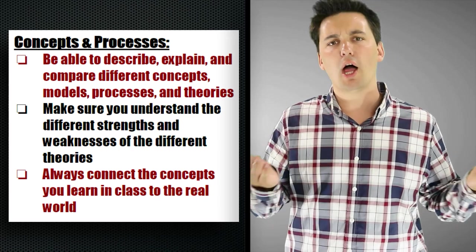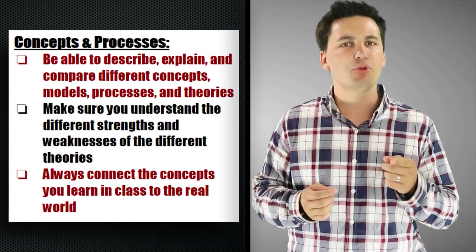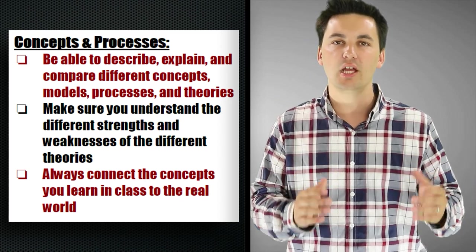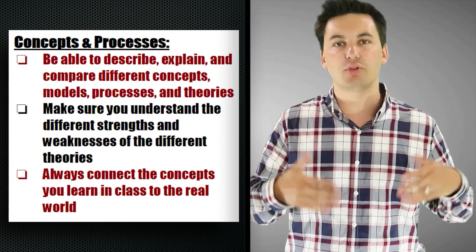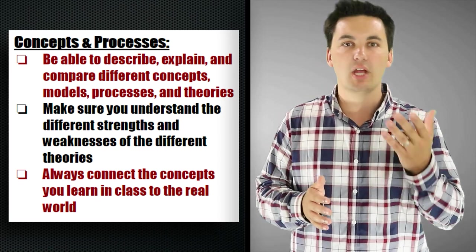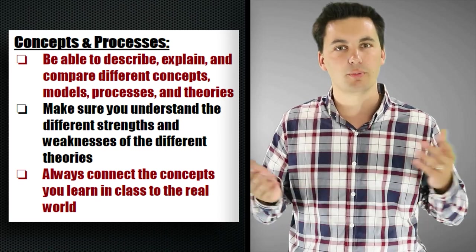For example, you're going to be learning about von Thunen's model in the agriculture unit, and you're also going to be learning about the concentric zone model in the urban geography unit. And there might be one that's like compare and contrast, where you're looking at the two. Well, I could look at, okay, both are using the bid-rent theory. This is a concept that as I move further away from the city, my land value is going to go down, things are cheaper, and then people will locate in different areas based off it. In agriculture, similar, things are going to be occurring.